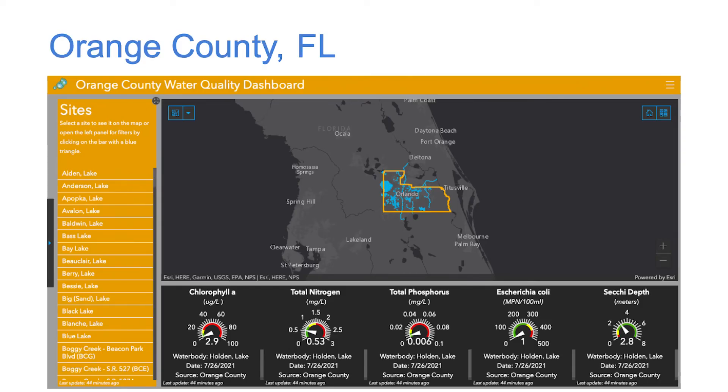Can you tell the audience about a couple of really good model web apps they can check out to see what they could build as a GIS developer? The one developed by Orange County in Florida is called the Water Quality Dashboard. It has maps and a list of districts — if you click a district, it shows you water quality parameters like chlorophyll, nitrogen level, and phosphorus level with gauges in different colors showing whether they're at a dangerous or safe level. In this course, you will replicate this water quality dashboard for your own county.